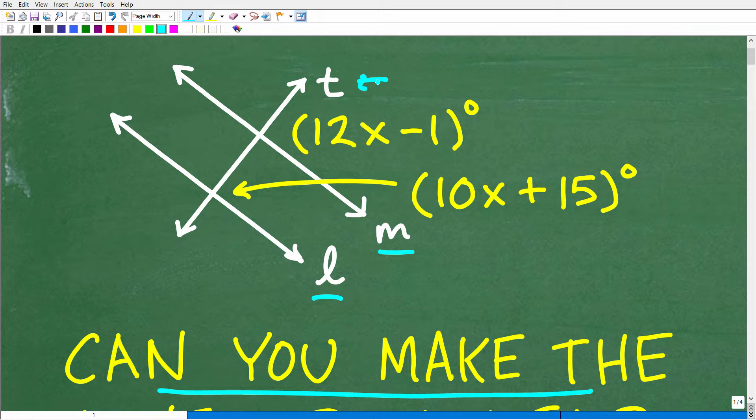And these two lines are being intersected by this other line T. This is called a transversal. But we have two angles here, this angle and this angle. This first angle is 10x plus 15 degrees. The second angle is 12x minus 1 degrees. And the question is, what value of x is required to make these two lines L and M parallel?